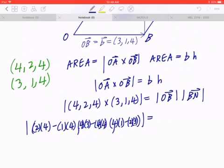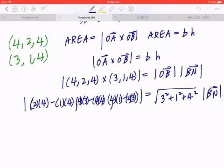Now, on the right hand side, define the magnitude of OB. This equals to the square root of 3 squared plus 1 squared plus 4 squared. And you copy that last part, the magnitude of BN. Now, if you look at the left hand side carefully, you can collect like terms and simplify this. That's going to be 8 minus 4, that's 4. 12 minus 16, that's negative 4. 4 minus 6, that's negative 2.